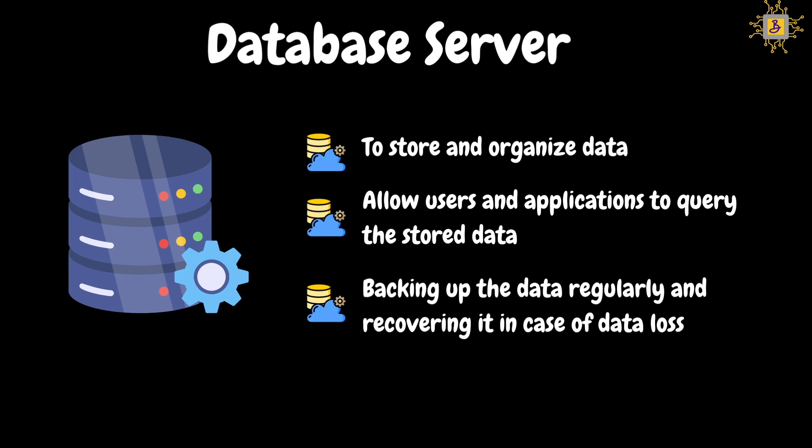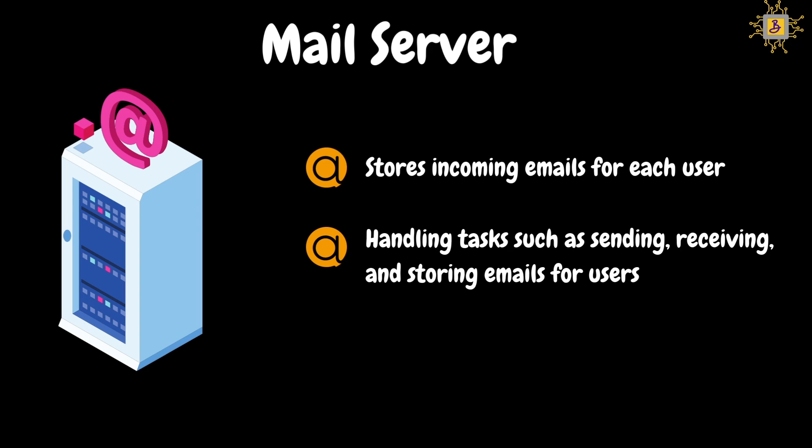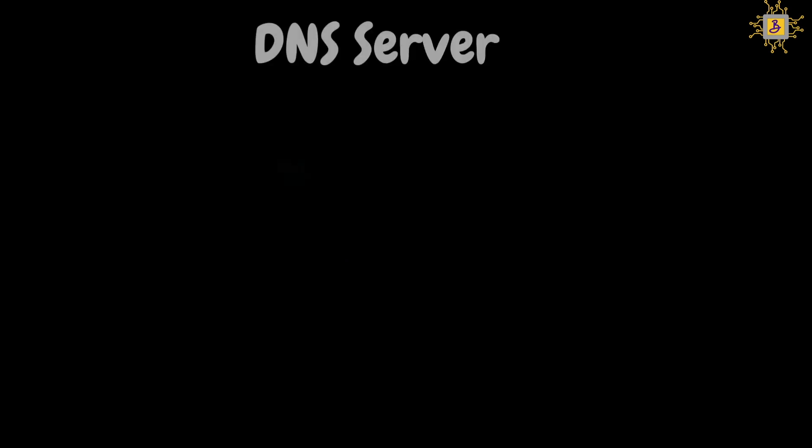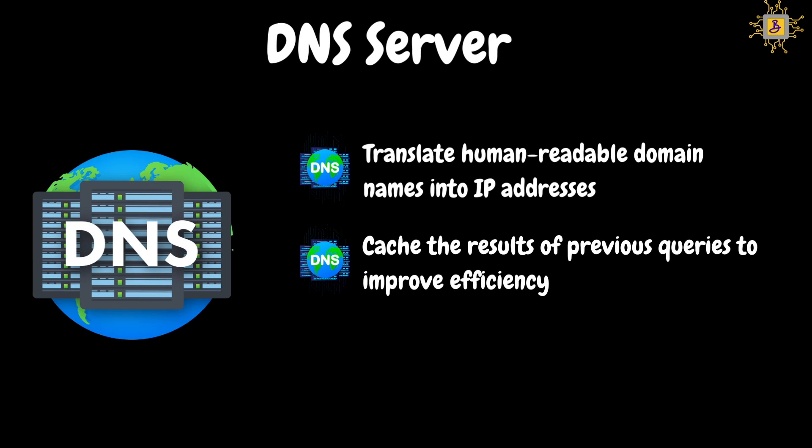SQL means structured query language. The database server will also take regular backups of the data and recover it in case of data loss. Mail server: the mail server stores incoming mails for each user in their respective mailboxes until they are retrieved by the user's email clients. It handles tasks such as sending, receiving, and storing emails for users, and authenticates users before allowing them to send or retrieve emails. DNS server: DNS means domain name system. DNS servers translate human-readable domain names into IP addresses, enabling users to access websites using familiar domain names instead of numerical IP addresses. For example, if we type www.google.com in the browser, the DNS will translate google.com to its IP address. DNS servers also cache the results of previous queries to improve efficiency and reduce response time for subsequent requests.